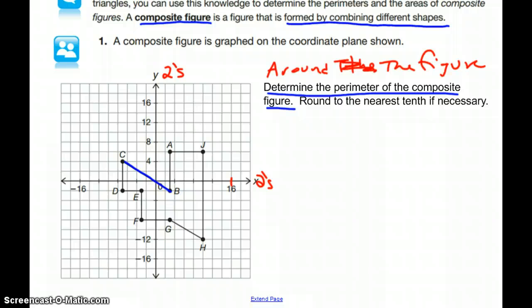We're going to start with CB. One way to find the length of CB is to form a right triangle and use the Pythagorean theorem.